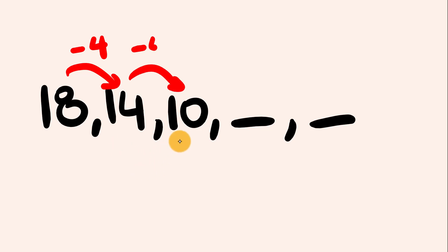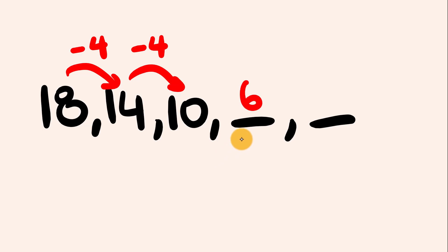So it's a nice simple arithmetic sequence where we're going down by 4s. 10 minus 4 is equal to 6, and 6 minus 4 is equal to 2.